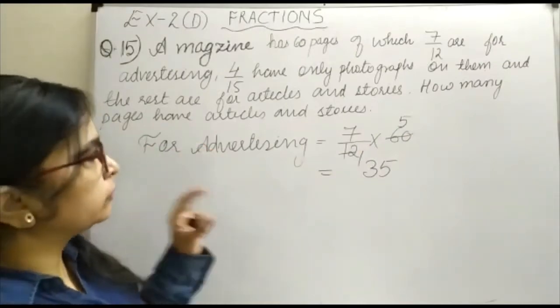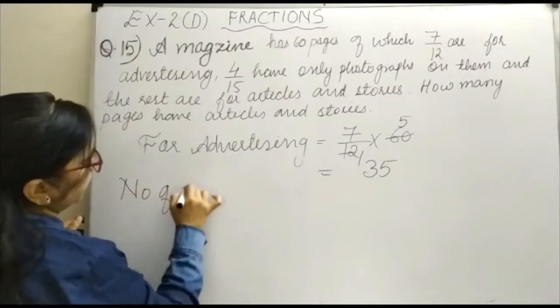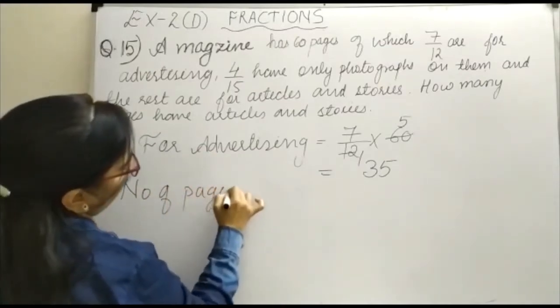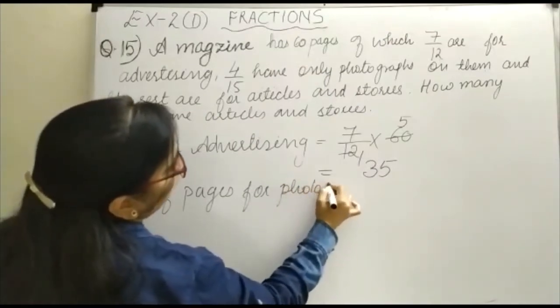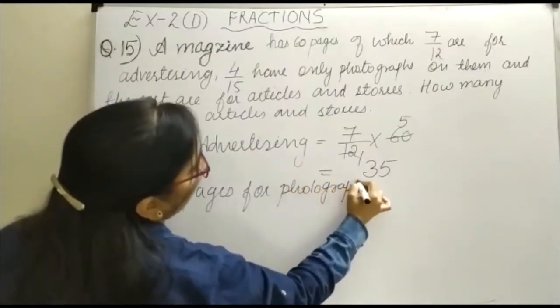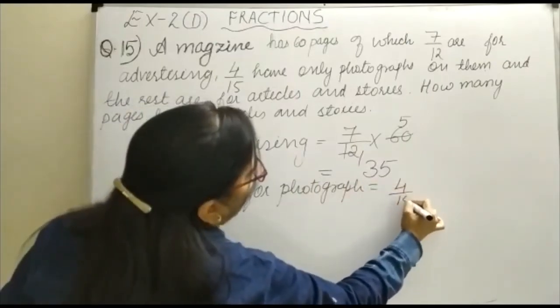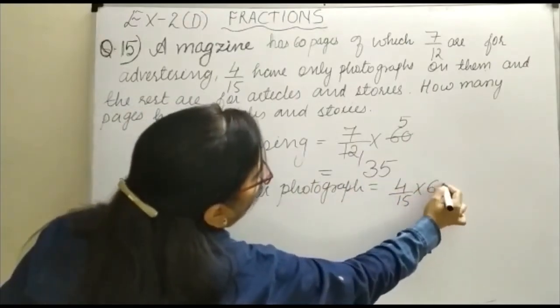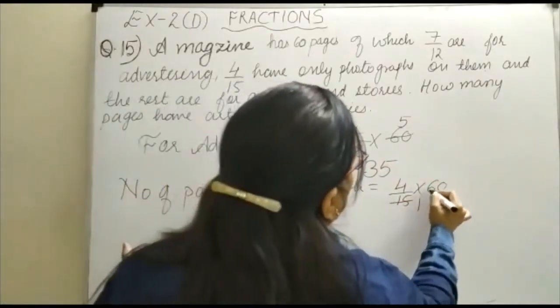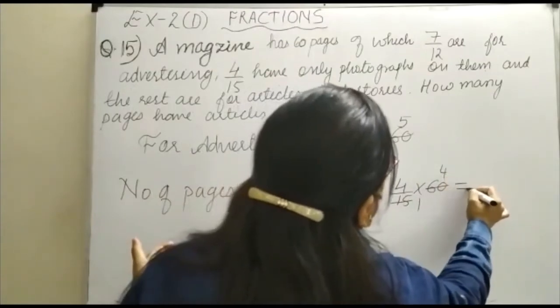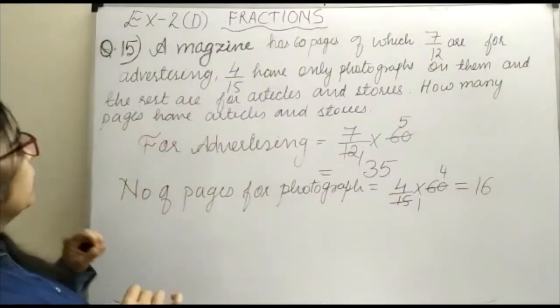So number of pages for photographs, you can work out that is 4 upon 15 again into 60, because 60 is a total number of pages. So here it is 15 ones are 15, fours are, so how many you are having? 16. Now it is said the rest are for the articles and stories.